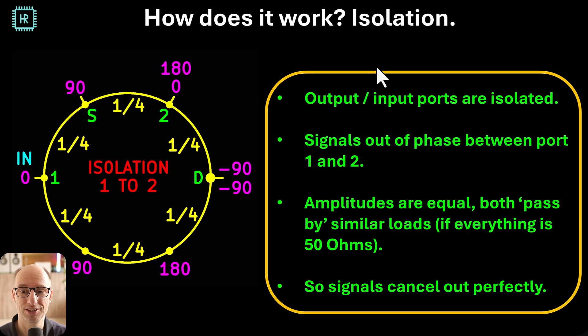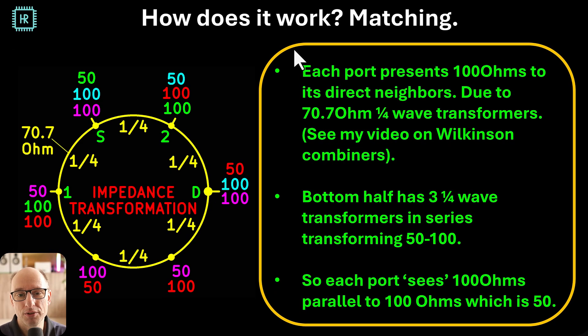So the impedance matching is slightly more complex. And if you don't know about quarter wave transformers, please look at my video on the Wilkinson power combiner. I'm explaining quarter wave transformers in great detail using a Smith chart. I'll try to put the link up here in the video or definitely put it in the description. So a quarter wave transformer with the right impedance will transform 50 ohms to 100 ohms.